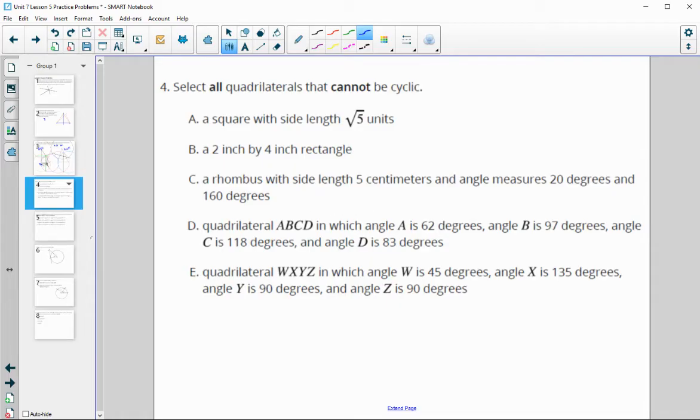Select all the quadrilaterals that cannot be cyclic. Remember, cyclic means that opposite angles add up to 180. So we want to find ones that don't. In A, we have a square. We know that a square—we don't really care about the side lengths. All we're looking at is these angles. And the angles are all 90. So the ones across from each other, 90 plus 90 is definitely going to be 180. And then 90 plus 90 is going to be 180. So this one is cyclic. And we want the ones that cannot be cyclic. So this one is cyclic. So we're going to cross it off.